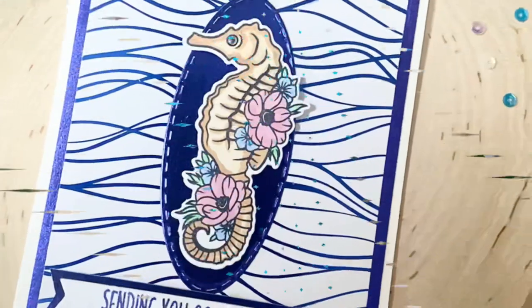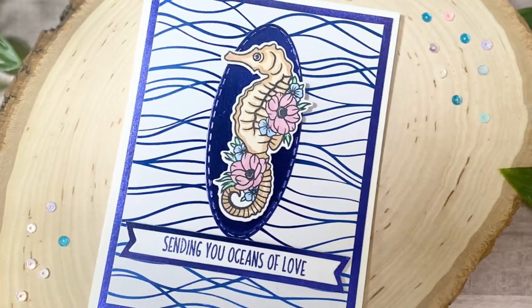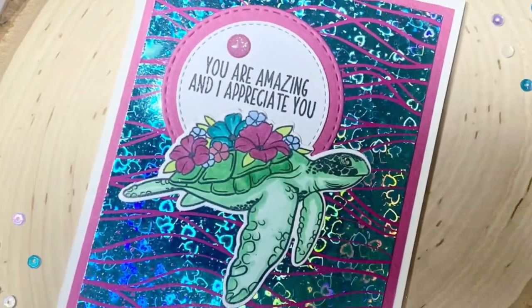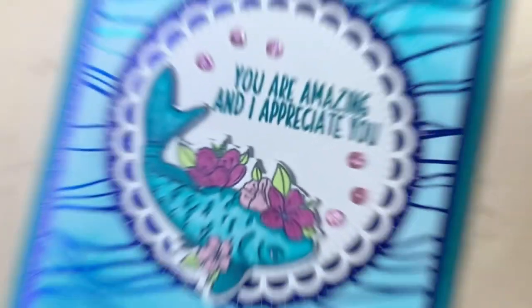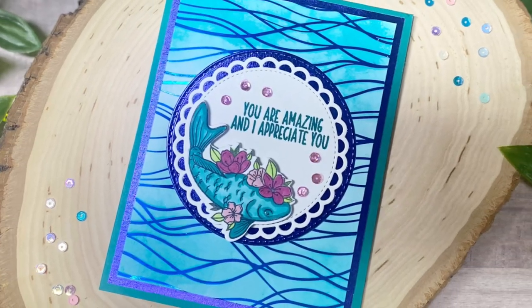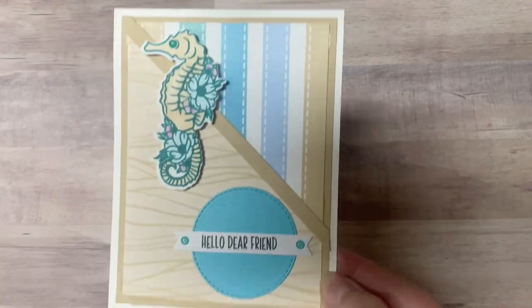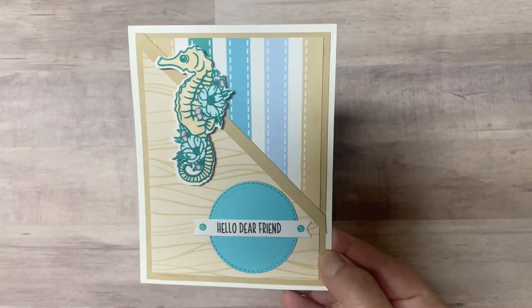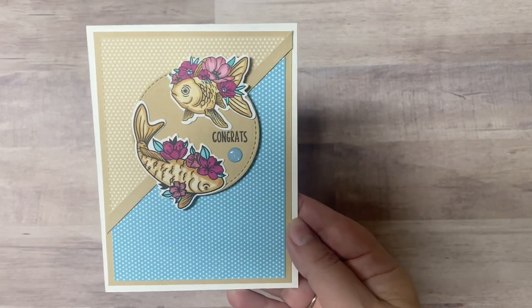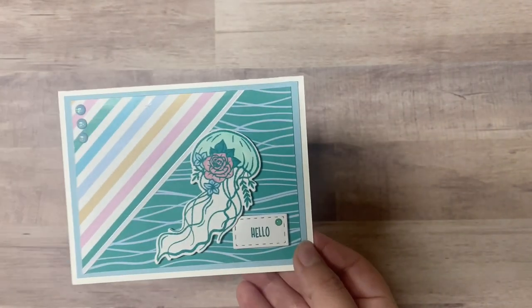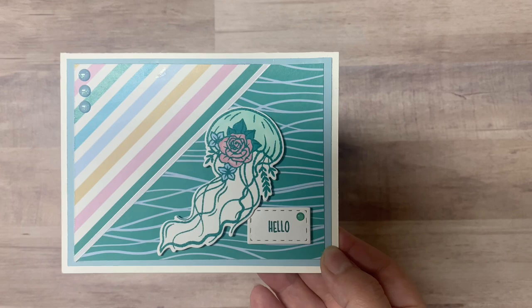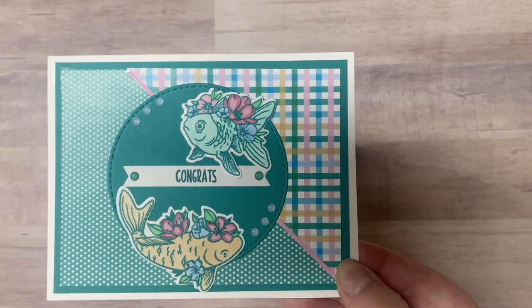So here's a look at all of the cards again. I just love how they turned out. Some of them are more simple than others, but I just love the colors in this kit. And these under the sea images with the flowers are simply gorgeous. I'd love to know which card is your favorite down in the comments section below.